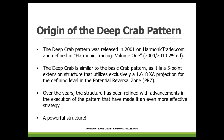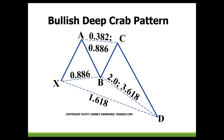Over the years the structure has been refined with advancements in execution, making it an even more effective strategy. The crab pattern itself is probably one of the most powerful harmonic structures that there are. In this bullish deep crab illustration, we notice the M formation where the B point is at an 0.886 — that's a mandatory must-hit level at 0.886.